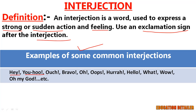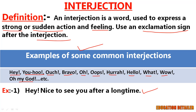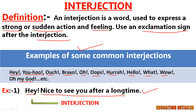Common interjections include: hey, yoo-hoo, ouch, bravo, oh, oops, hurrah, hello, what, wow, oh my god, etc. Look at the first example — 'Hey, nice to see you after a long time.' Here 'hey' is an interjection used for a warm or happy feeling when we meet someone after a long time. Remember, interjections are not grammatically related to the rest of the sentence — if I remove 'hey', the sentence still makes complete sense and is grammatically correct.